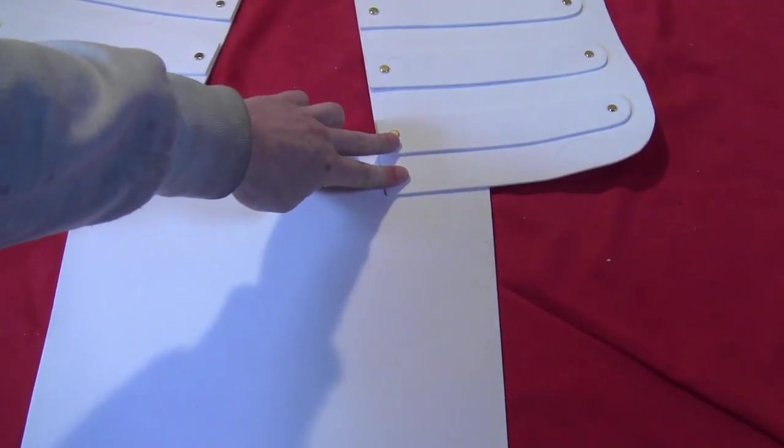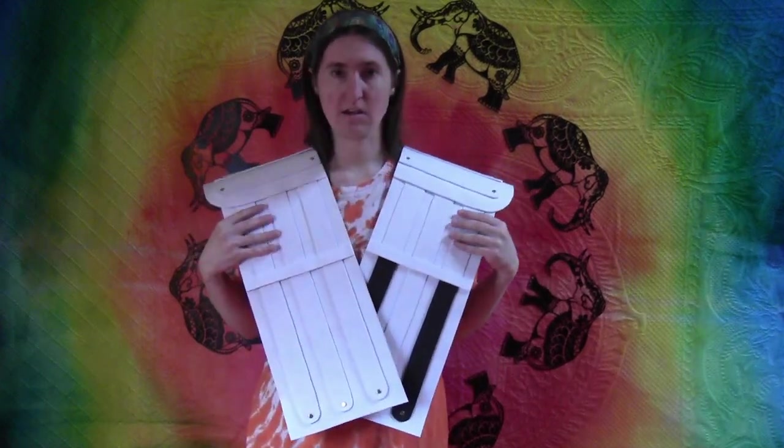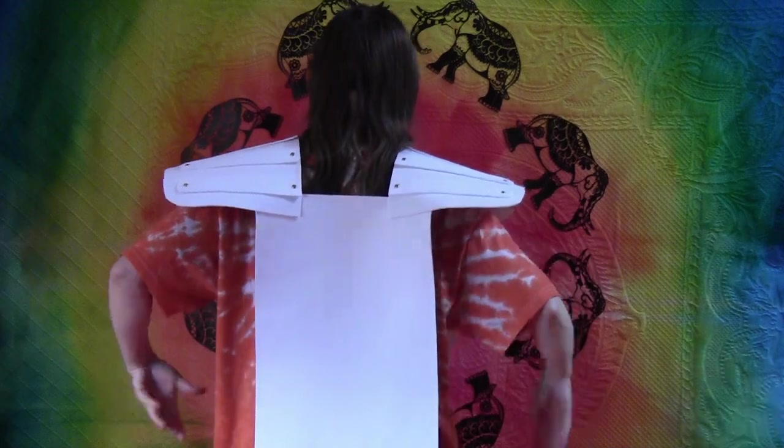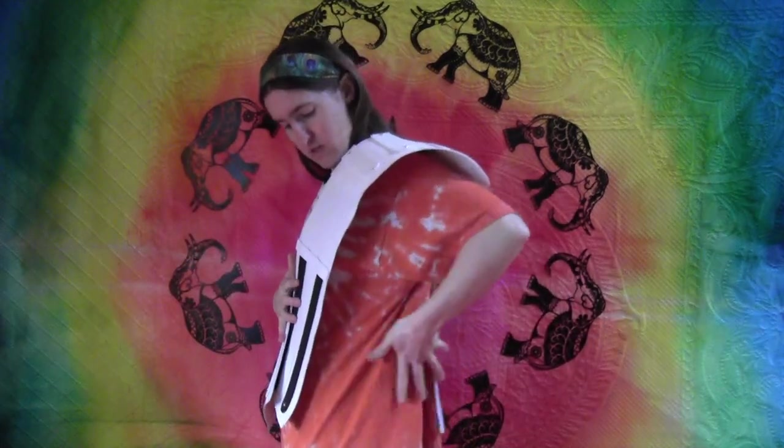Glue that onto the craft foam back. This is what you should have so far—the long pieces go in the front. If I'd had more, I would have done a wider back and brought it around the sides too.